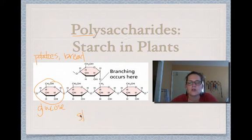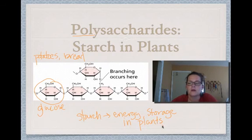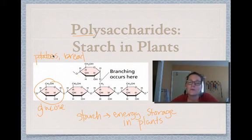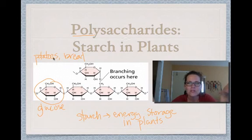Starch is used for energy storage in plants. When plants go through photosynthesis and make their sugars, they store their extras in starches. Sometimes they store them in oils, like olive oil or peanut oil. But for potatoes, a potato is made up almost entirely of starch. The potato plant makes all this extra sugar and stores its excess energy in the form of starch.